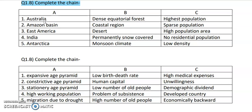Let us move further with the first question. We have three sections — three columns A, B and C — and we need to match each and every column. Whenever you do such kind of questions, always keep one thing in mind: if you see options like Australia, Amazon basin, East America, India, Antarctica, start with the easiest option. That will ultimately give you the correct answers.